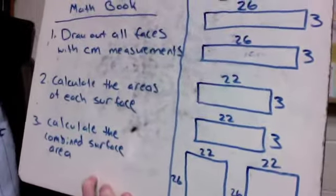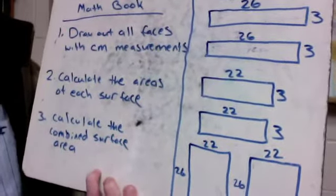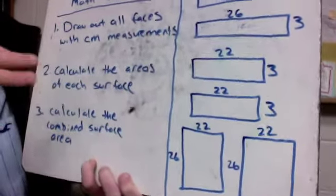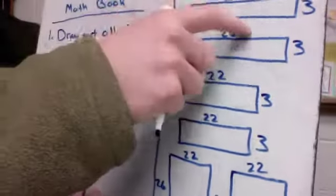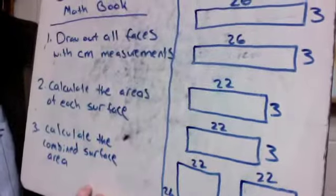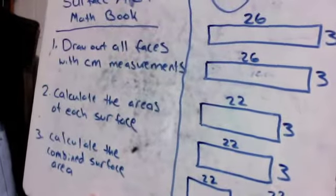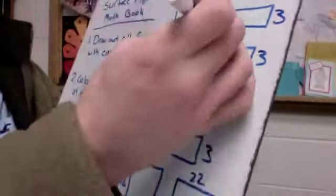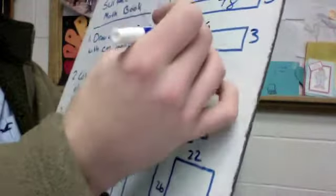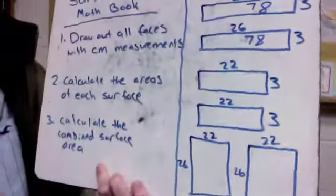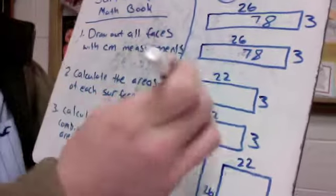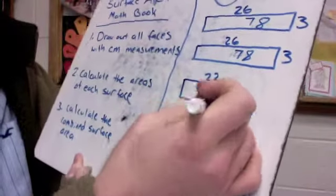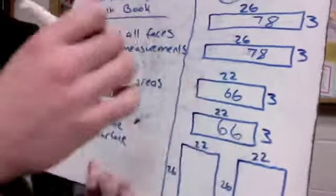So now we just need to find all the areas of the individual surfaces to find the combined surface area. The side is 26 by 3, so that's just 26 times 3, that's 78. So this one would also be 78. My sides are going to be 22 by 3, which would be 66.